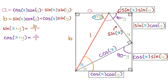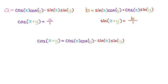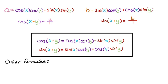Putting it all together: A is cosine x cosine y minus sine x sine y, and B is sine x cosine y plus cosine x sine y. Cosine of x plus y equals A over one, and sine of x plus y equals B over one. So cosine of x plus y is just A, and sine of x plus y is just B.